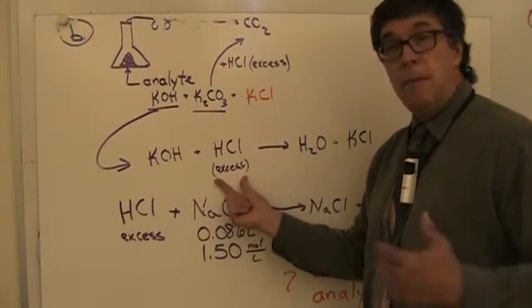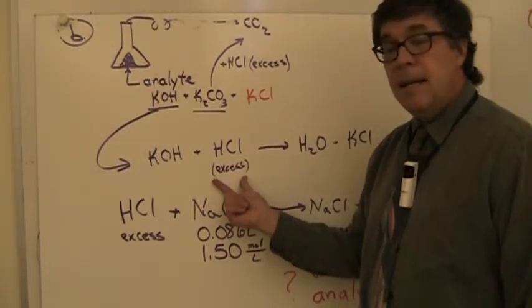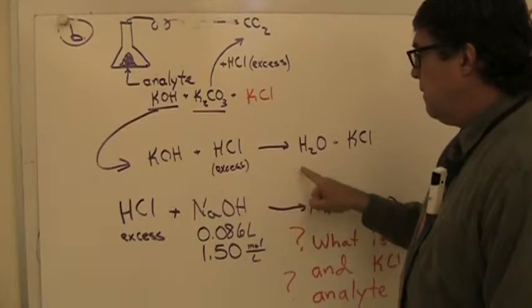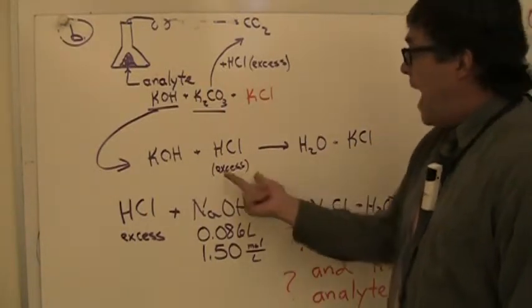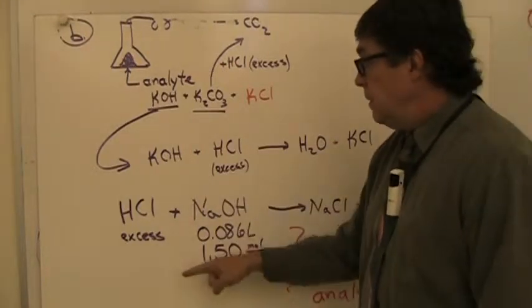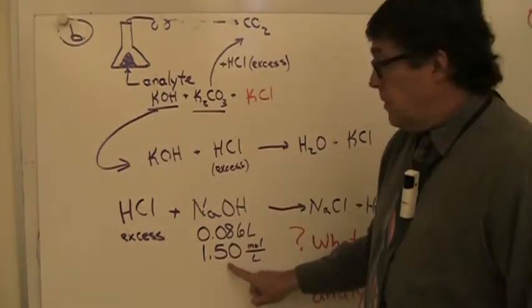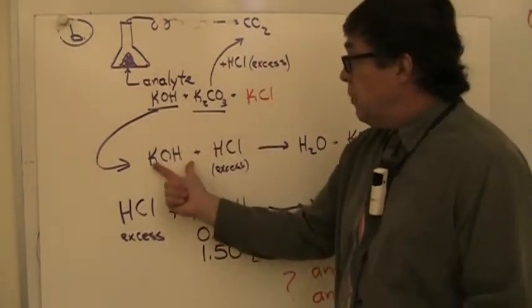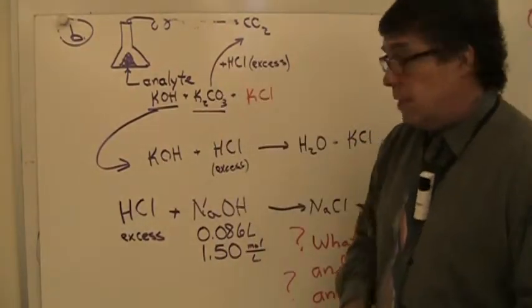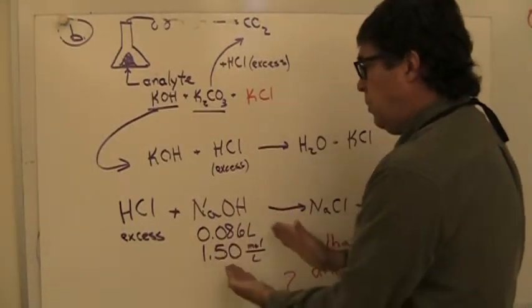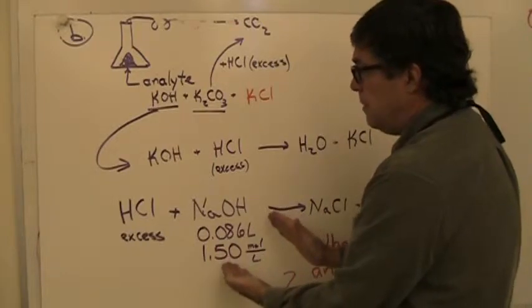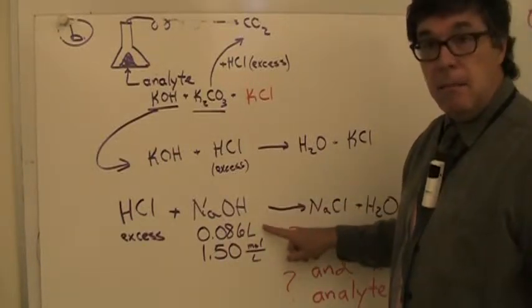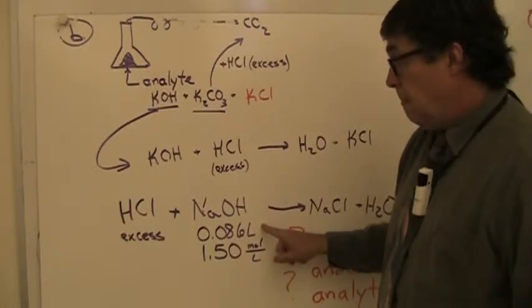We had excess of the hydrochloric acid, so we titrated that with sodium hydroxide. This is how much hydrochloric acid was left after the reactions that produced CO2. Now we're testing to see how much excess hydrochloric acid there is. We titrate with 1.5 molar sodium hydroxide and it took 86 milliliters or 0.086 liters.